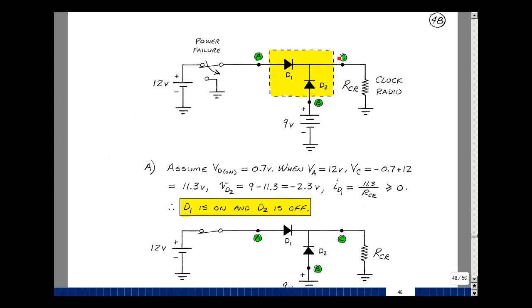Then this node voltage here is going to be minus 0.7 plus 12, or 11.3 volts. What's the voltage across this diode? Well, it's going to be this node voltage, which is 9. And this was calculated to be 11.3. So the voltage across here would be negative, actually minus 2.3.